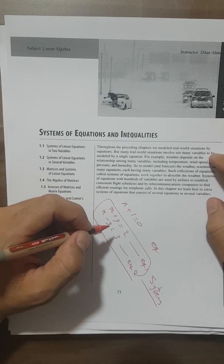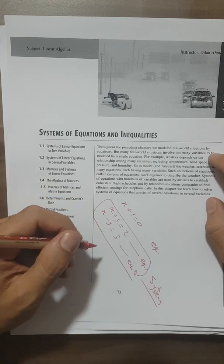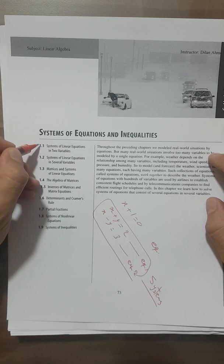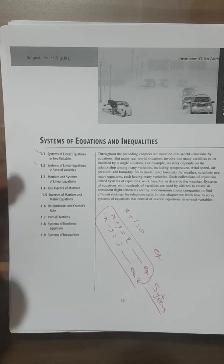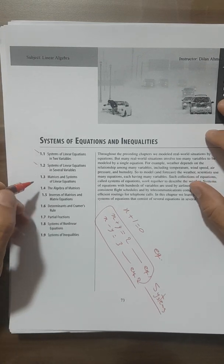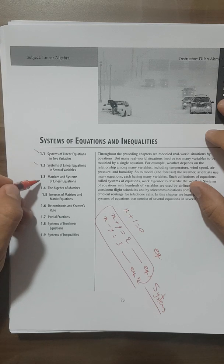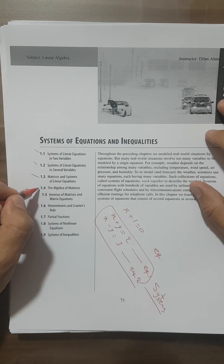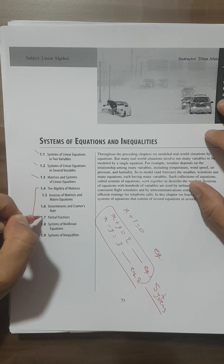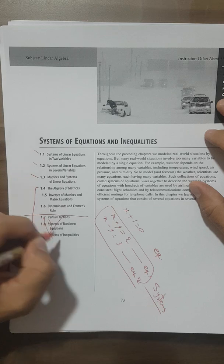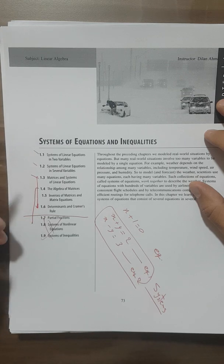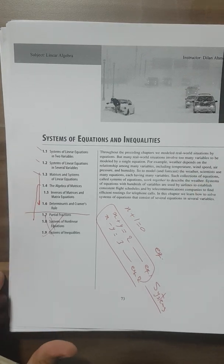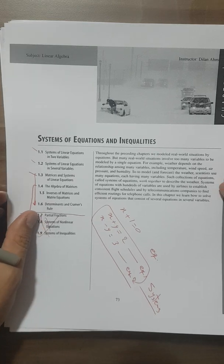For example, we have two equations and we want to solve them together, or we have three equations with three variables. Sections 1.1 and 1.2 are very easy — you saw this before in high school, so it's like a review. Then we will convert this to the augmented matrix and talk about matrices in general from sections 1.3 to 1.6, which help us with solving equations.